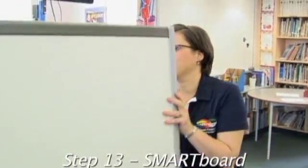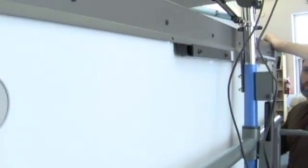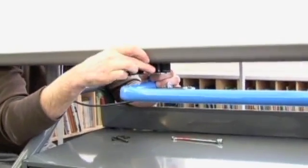Now it's time to attach the smart board. With two people, carefully place the top back edge of the smart board frame onto the wall mounting bracket. Then secure the bottom brackets of the smart board to the iRover frame.